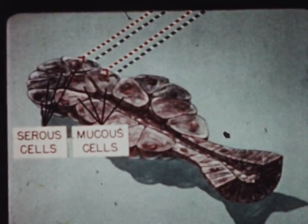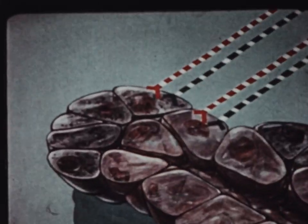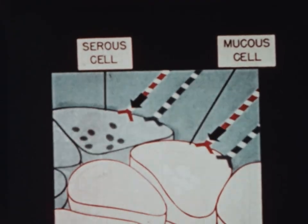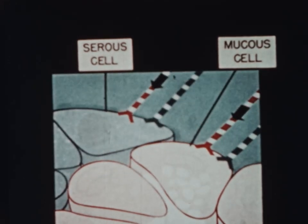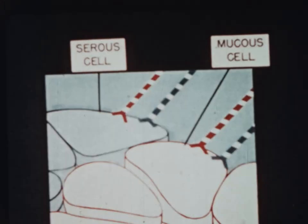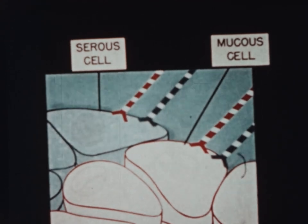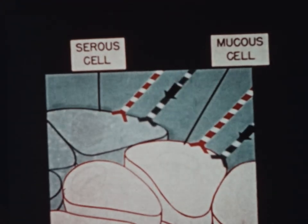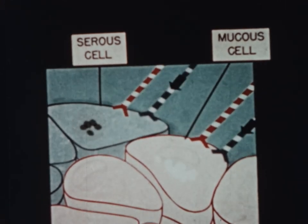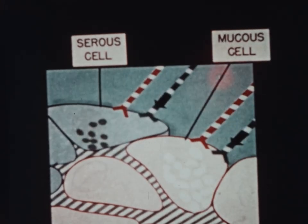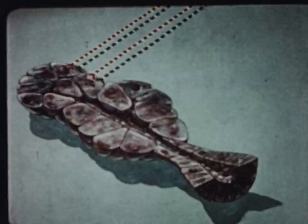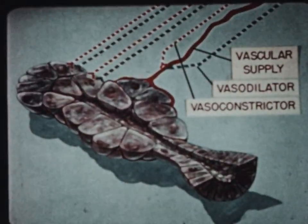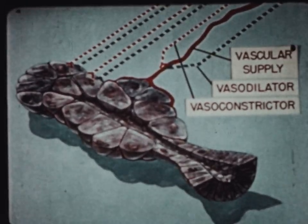Mucus and serous cells of the gland are stimulated by both types of fibers. Sympathetic stimulation produces a scanty viscous saliva, and parasympathetic stimulation leads to a thinner watery saliva. It is pointed out that vasomotor components may well have additional effects on the quality of the secretion.